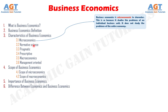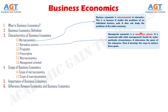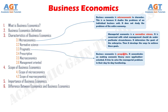Number 2: Normative science. Managerial economics is a normative science. It is concerned with what management should do under particular circumstances. It determines the goals of the enterprise, then develops the ways to achieve these goals. Number 3: Pragmatic. Business economics is pragmatic. It concentrates on making economic theory more application-oriented and tries to solve the managerial problems in their day-to-day functioning.